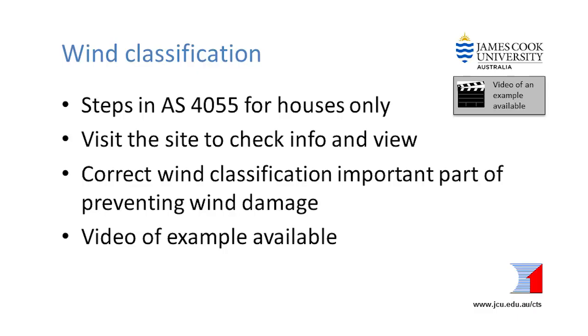The steps outlined in this video are detailed in AS4055 and use information from online resources. Make sure you visit the house site to confirm the details found off the web and to assess the view as a final check. The wind classification is required to select appropriate windows, member sizes, connections and structural details for new houses and renovations. Correct wind classification is vital to building wind resistant houses. If you would like more information on calculating wind classification for a site, another video is available that provides a worked example.